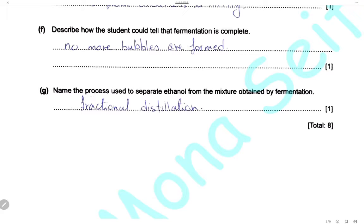Name the process used to separate ethanol from the mixture obtained by fermentation. The mixture is a mixture of liquids — we have sugar solution and ethanol. A mixture of liquids can be separated by fractional distillation. We can separate ethanol from the mixture with the sugar solution by fractional distillation.